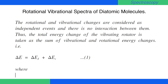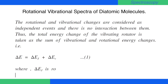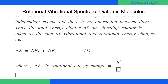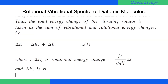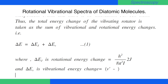Where ΔEj is the rotational energy change, which is given by h² / (8π²I) · 2j, and ΔEv is the vibrational energy change, which is given by (v' − v) · h · ω.